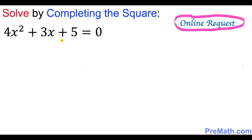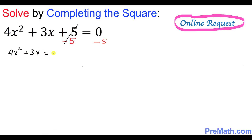The very first step is to make sure that we have only x variables on the left hand side. That means this positive 5 must go on the right hand side. So I'm gonna put minus 5 on both sides. This negative and positive 5 are gone, so we ended up with 4x squared plus 3x equal to negative 5.